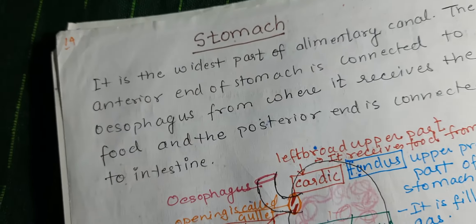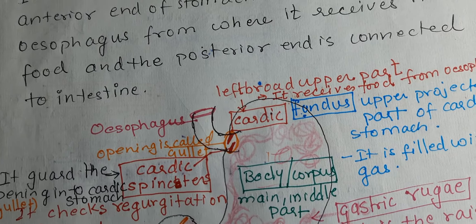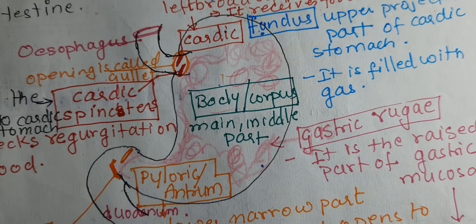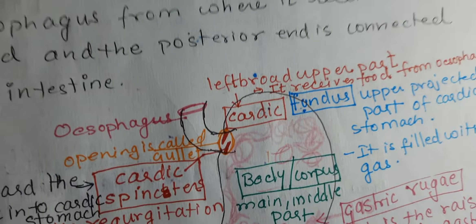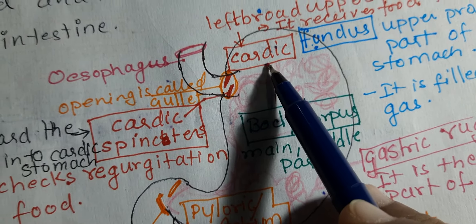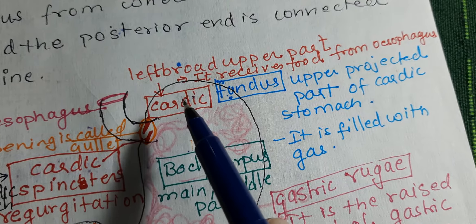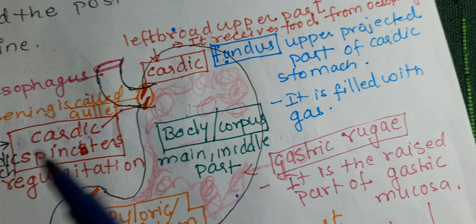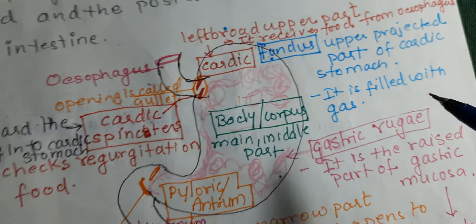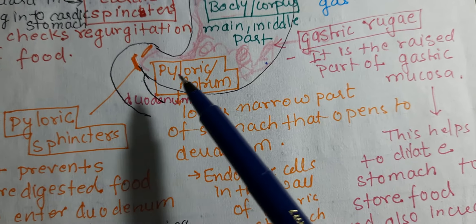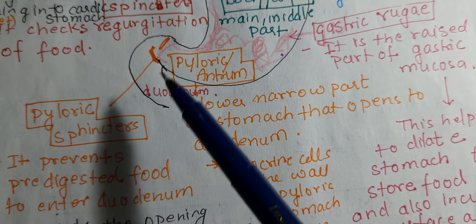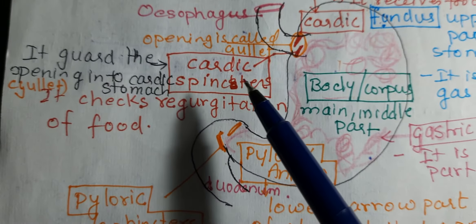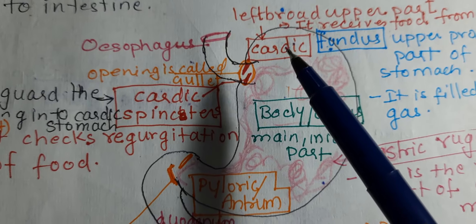From the posterior end, food passes to the small intestine. The stomach is a J-shaped organ. Food from the esophagus enters the first part called the cardiac region, which is the left broad upper part. The next upper portion is called the fundus, which is filled with gases. The main middle portion is called the body or corpus, and the narrow portion is called the pyloric antrum. At the end, there is a sphincter called the pyloric sphincter.